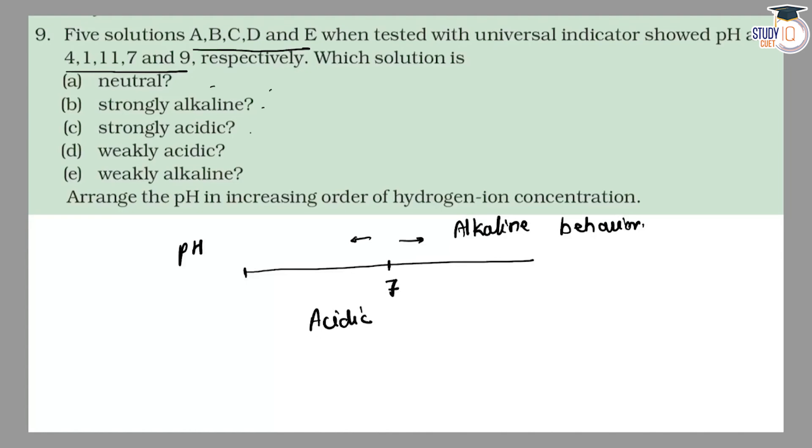So first, part A. Part A is neutral because neutral pH is 7. Now, 7 pH is D solution. So A has been answered, solution D.